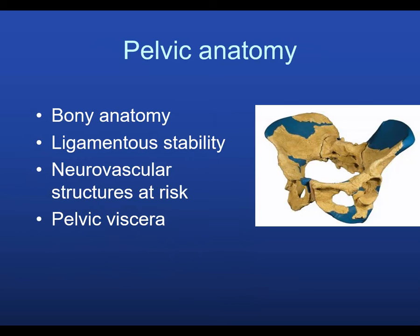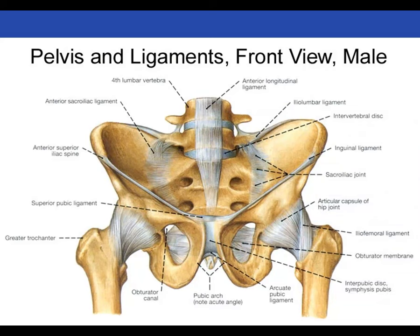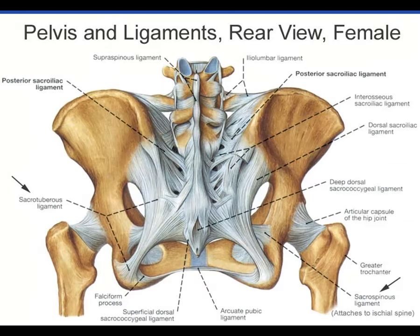We'll go through some basic topics: bony anatomy, ligamentous stability, neurovascular structures at risk, and the pelvic viscera. Here's a view reviewing the pertinent pelvic bony and ligamentous anatomy from the front and back. Pay close attention to the ligamentous complex in the back — the tremendous posterior SI ligaments are some of the strongest ligaments in the body. When disrupted, that creates the key to posterior ring instability and the Tile Type C injury.